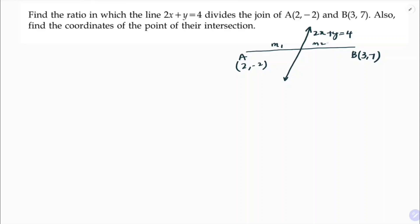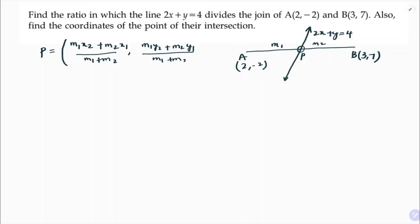So m1 and m2 are the unknowns. Point P divides AB in the ratio m1:m2, which we need to find. The section formula gives us: x = (m1·x2 + m2·x1) / (m1 + m2) and y = (m1·y2 + m2·y1) / (m1 + m2). First, find the point P and then substitute it into the line equation.